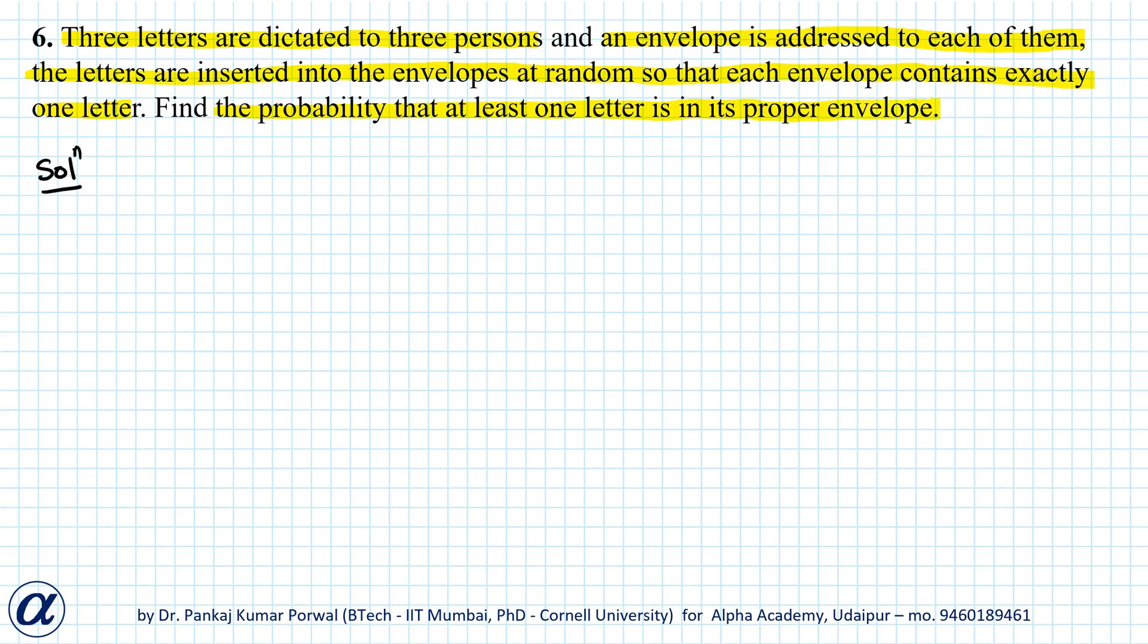So let's have three envelopes: E1, E2, E3. Now we have to place three letters in these three envelopes. That will have a total of three factorial number of ways, that is six ways.